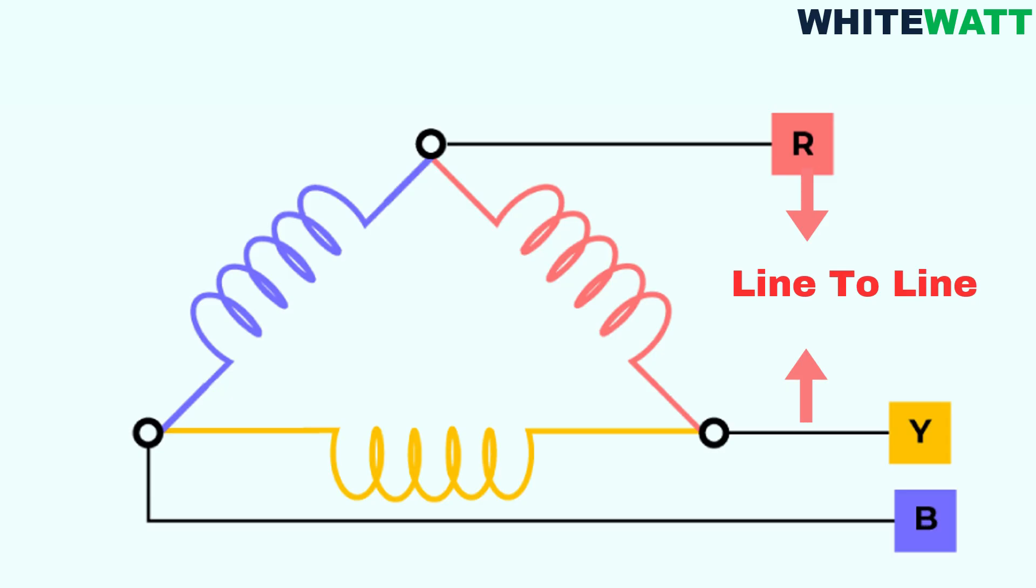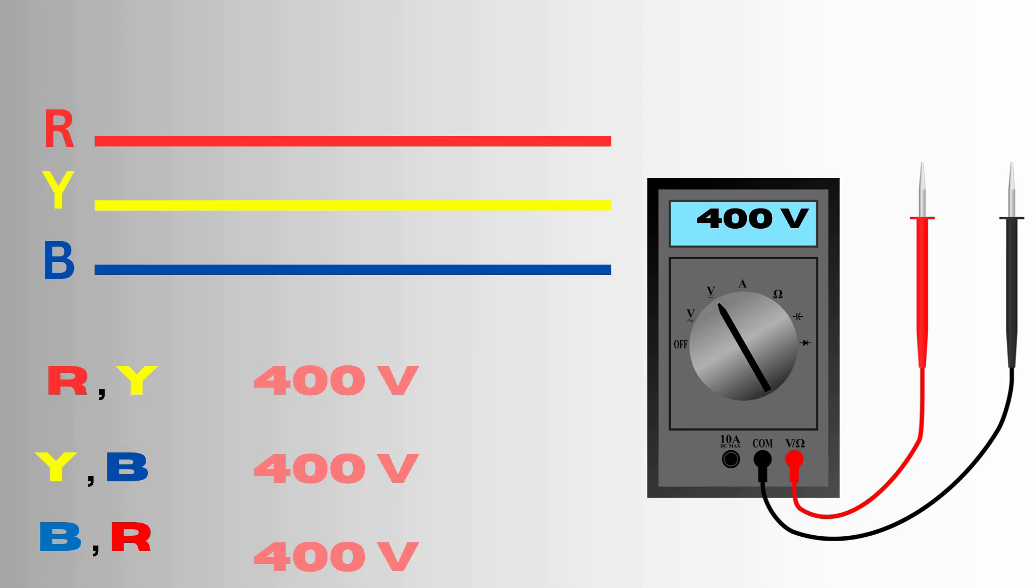For example, R and Y, Y and B, B and R in a three-phase system, where R is red, Y is yellow, and B is blue.